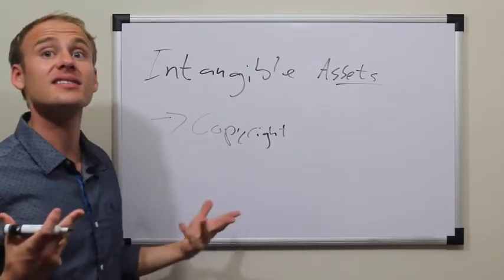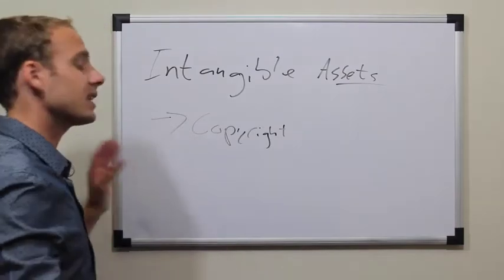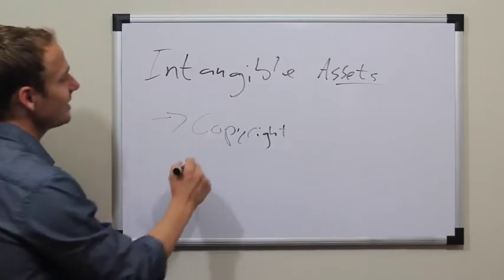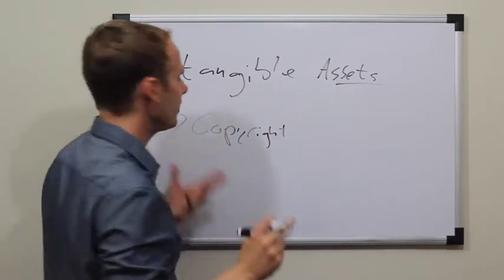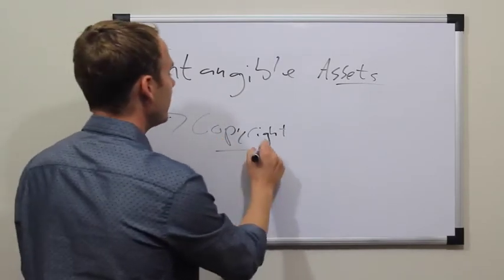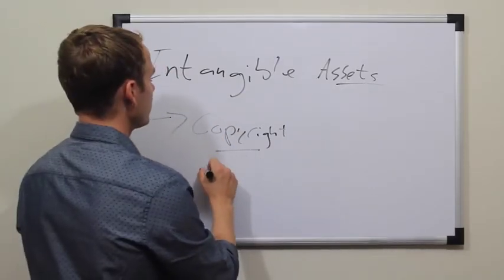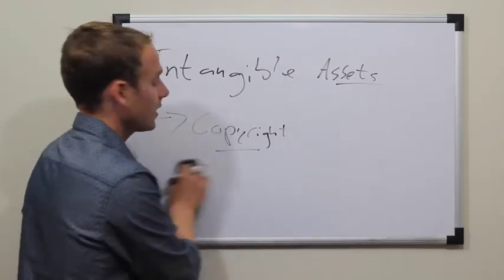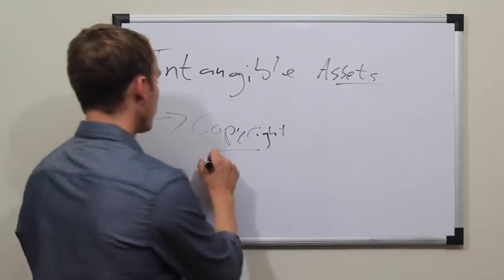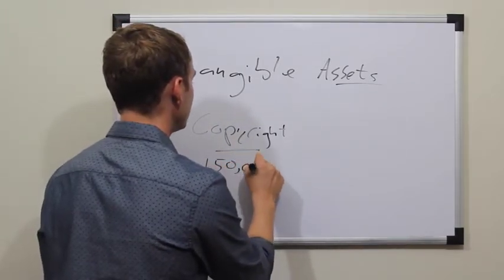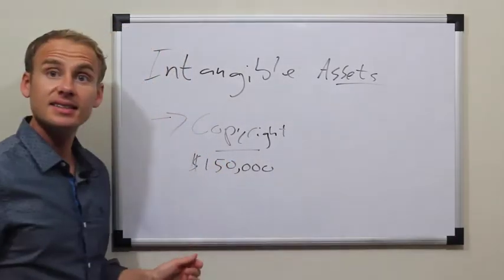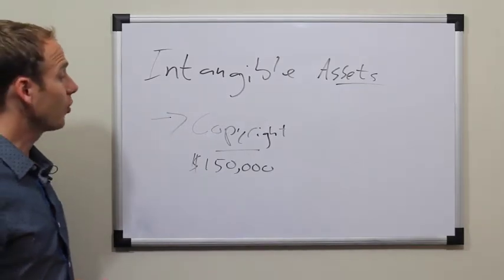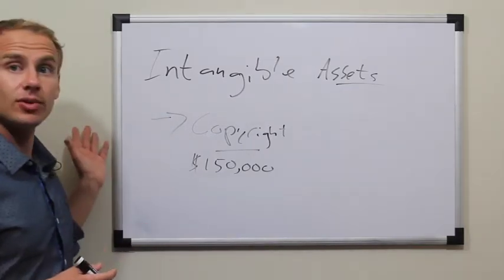We might buy the rights to a rap, or it could be a song or a publication — anything intangible. You can't touch it; it doesn't have a physical presence. It's not a fixed asset — fixed assets use depreciation. This is intangible, hard to touch, hard to feel. So let's say a copyright is purchased for $150,000. This is trading an asset — cash — for an intangible asset: the copyright.